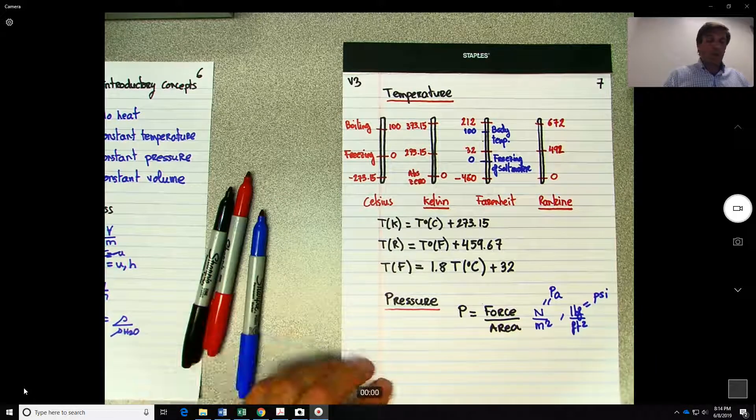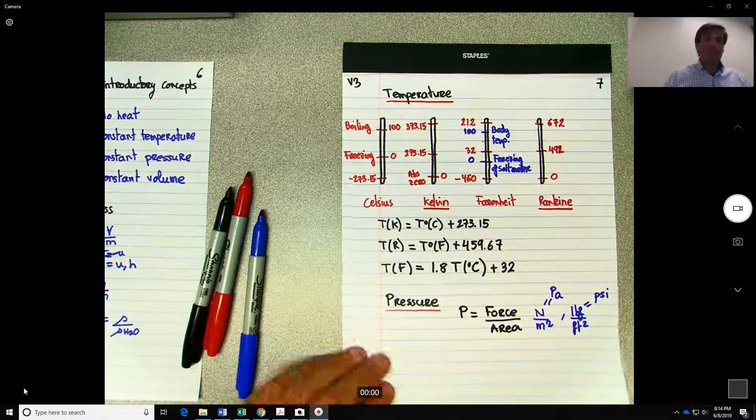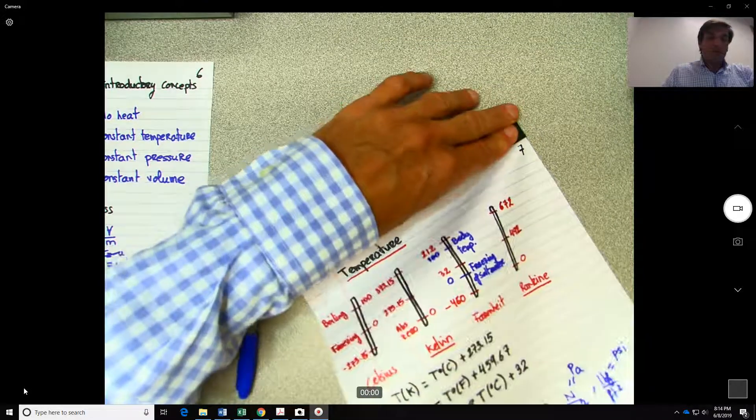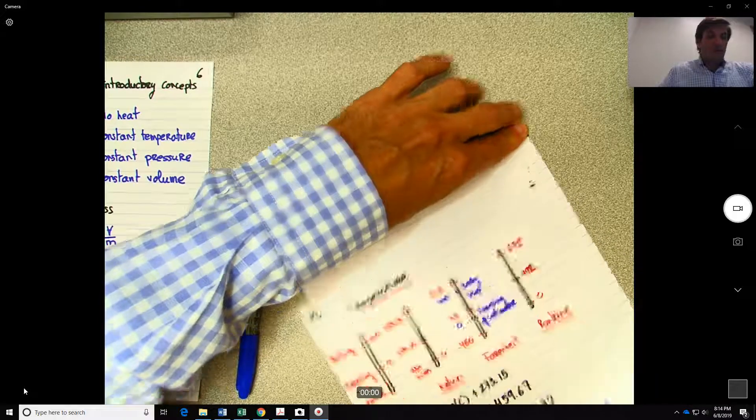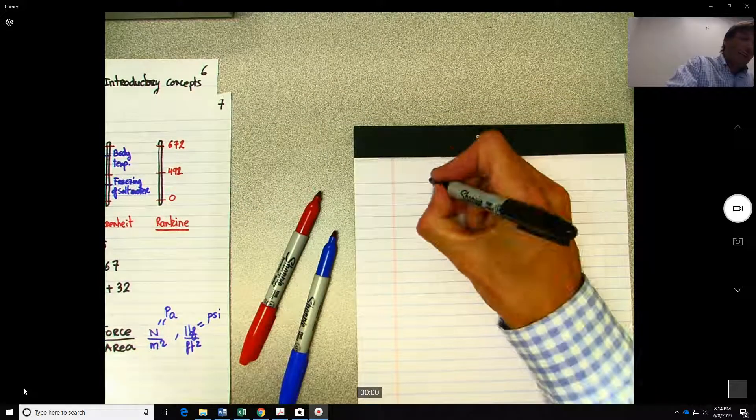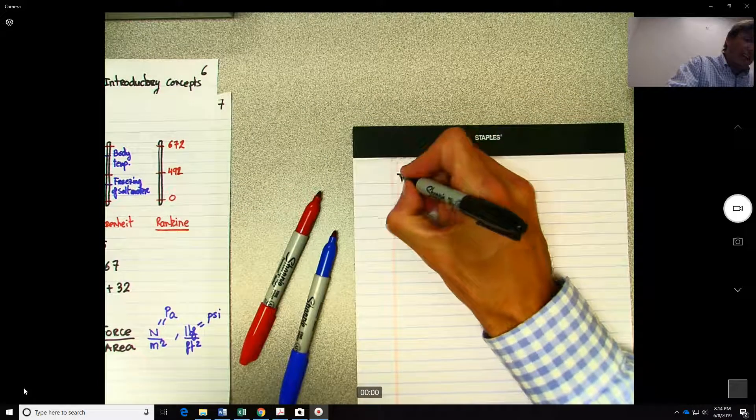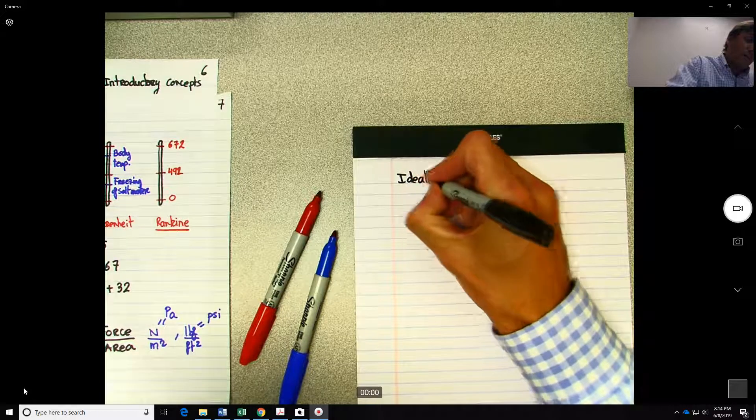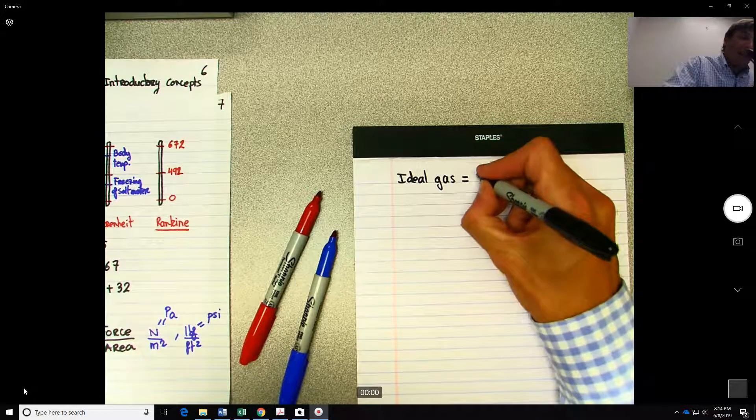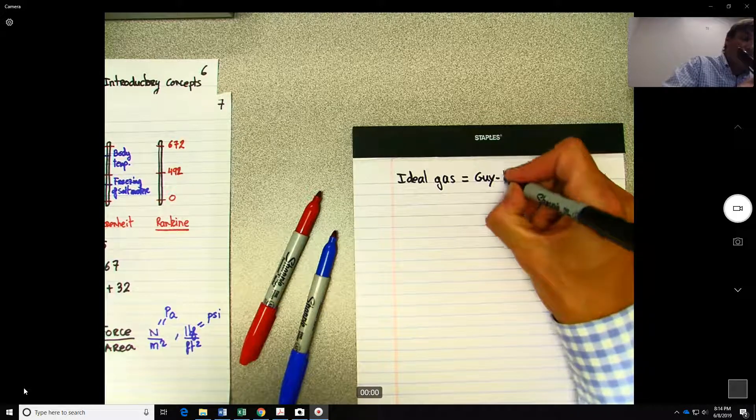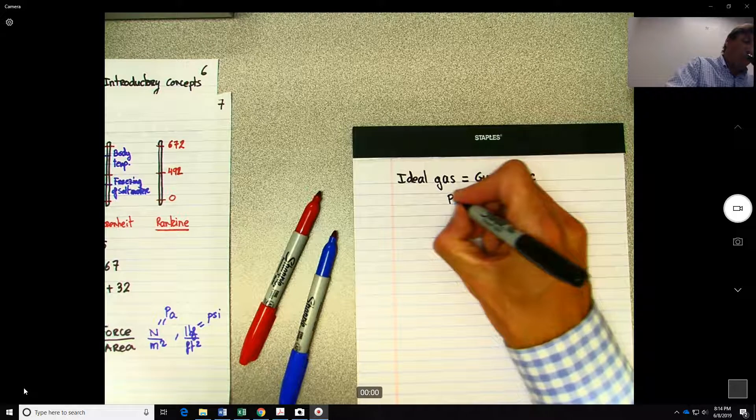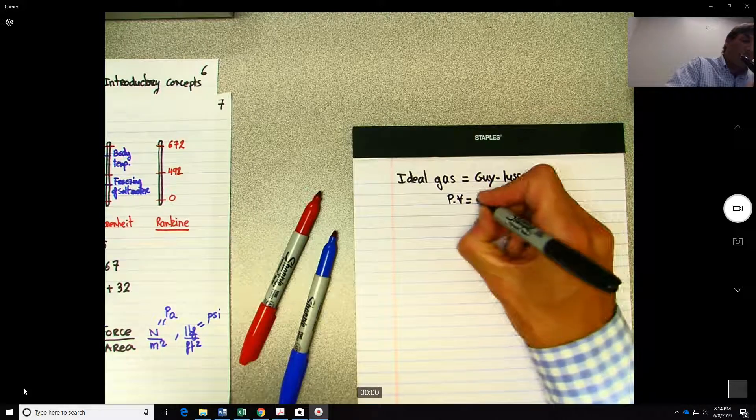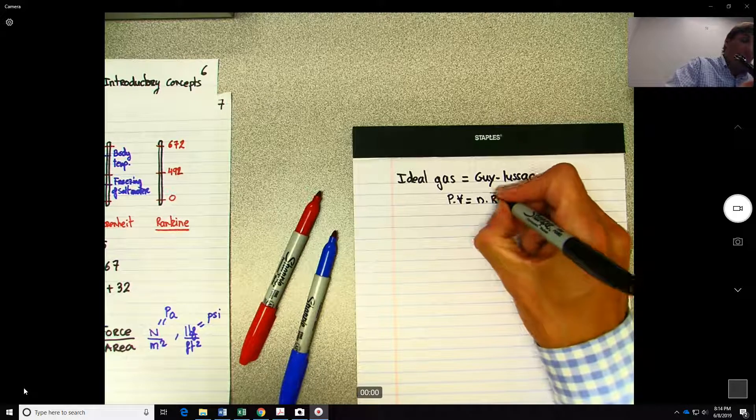Since we are talking about pressure and we just mentioned the specific values, let me just give you the form that you will find more commonly the expression for the ideal gas relation. So the general expression for the ideal gas relation, ideal gas. If you remember, that was developed by Gay-Lussac in the 17th century.